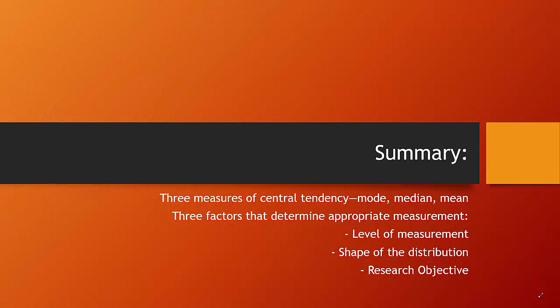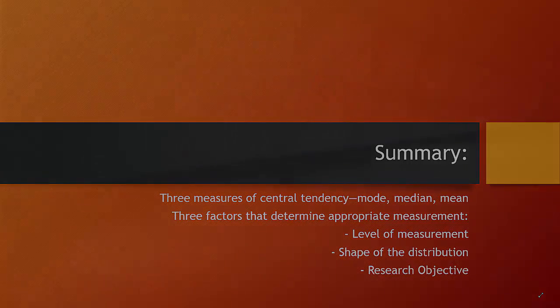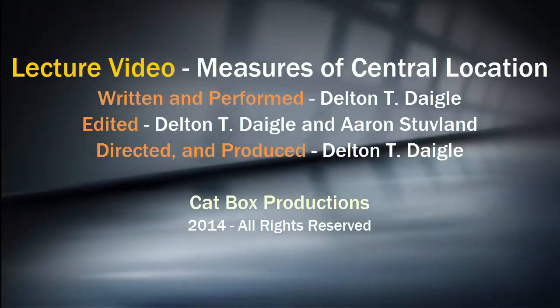We've covered the three measures of central tendency — the mode, the median, and the mean — and the factors that determine the appropriate choice: level of measurement, shape of the distribution, and research objective. Follow this up with the next video on measures of dispersion or variation.